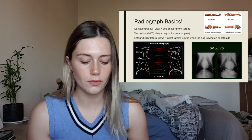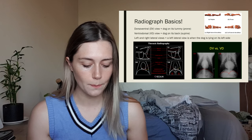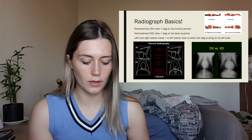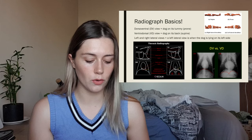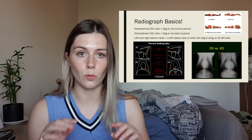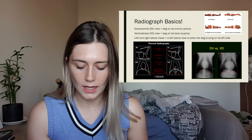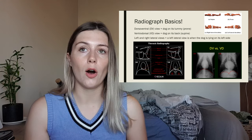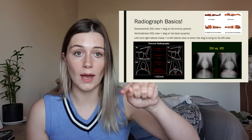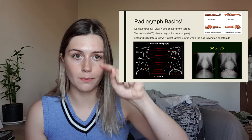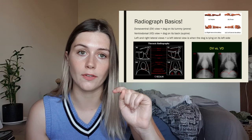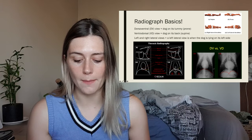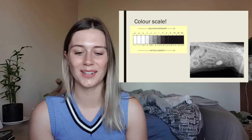Here are some examples of how to tell views apart. On a DV the diaphragm will look rounded, and on a VD it will make a V shape — the crura of the diaphragm form a V shape. On a left lateral view you can see both crura of the diaphragm: there's a darker shadow and then a lighter shadow in front of it, kind of overlapping — that is the left and right crura. On a right lateral the diaphragm just looks rounded.